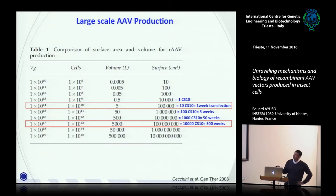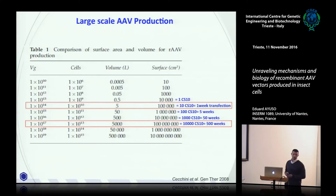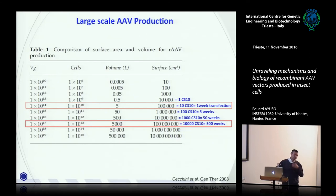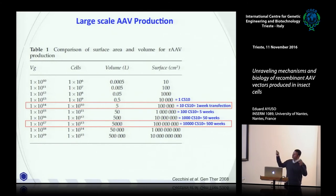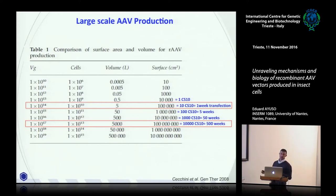When moving on a logarithmic scale, producing 10¹⁴ vectors requires about 10 cell factories. But to produce 10¹⁶ vectors you need 100 cell factories — that is about 5 weeks of transfection runs. And for 10¹⁷ vectors, you need 50 weeks of transfection. It is clearly not feasible to continue working on adherent cells using the classical system beyond a certain scale.